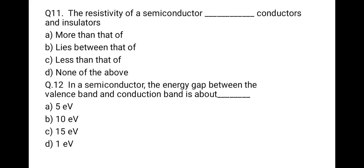The next question: the resistivity of a semiconductor lies between that of a conductor and an insulator. A semiconductor has low resistivity at zero temperature, and when we increase temperature its resistivity decreases. So it behaves as an insulator at low temperature and acts as a conductor at high temperature — its property lies between that of a conductor and insulator.